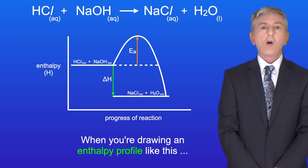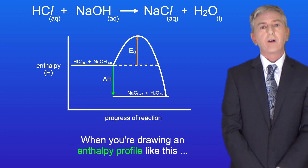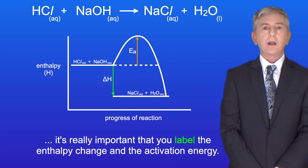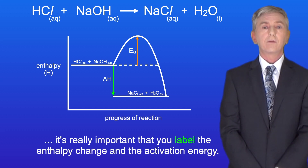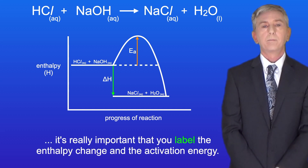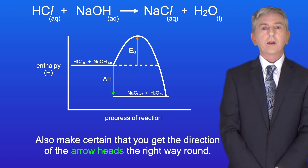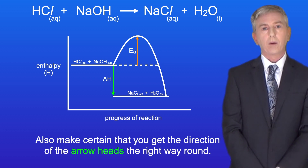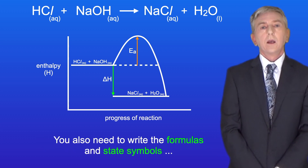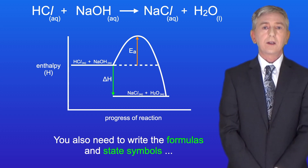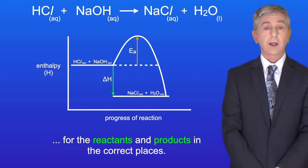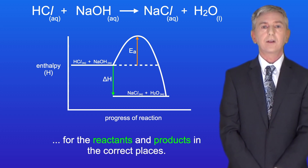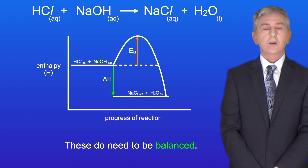When you're drawing an enthalpy profile like this, it's really important that you label the enthalpy change and the activation energy. Also make certain that you get the direction of the arrowheads the right way round. You also need to write the formulas and state symbols for the reactants and products in the correct places, and these do need to be balanced.